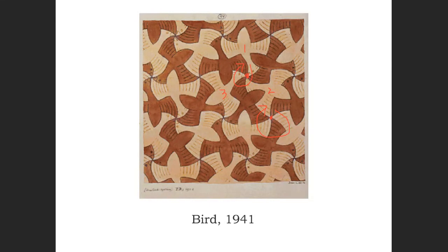Six birds are meeting at all of them, but this one where the beaks meet is only a threefold center. The other one I drew second is the only sixfold center. So this is a P6 — there's clearly no reflection at all. With sixfold patterns you've only got two options: P6 or P6M.